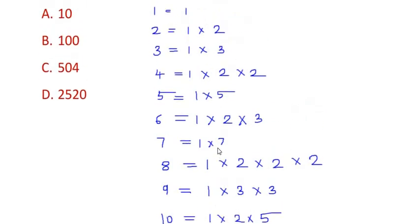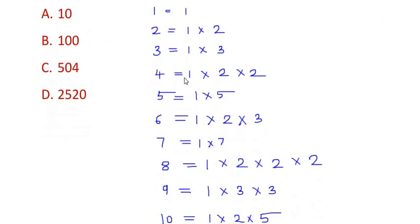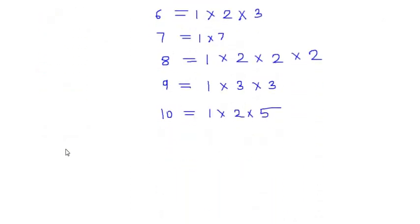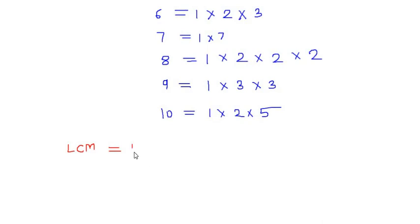Now after writing all the factors of these numbers from 1 to 10, we have to find out the LCM of these numbers. So let us start writing the LCM. 1 is present in all the numbers, so we can write 1 here. Take out the common terms.